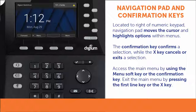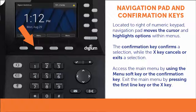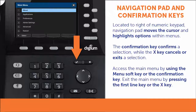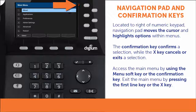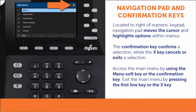When the phone is in its idle state, the main menu can be accessed using the menu soft key or by pressing the confirmation key. To exit the main menu, you can press the first line key to the right of the X button in the top right corner of the main menu screen, or you can press the X key.